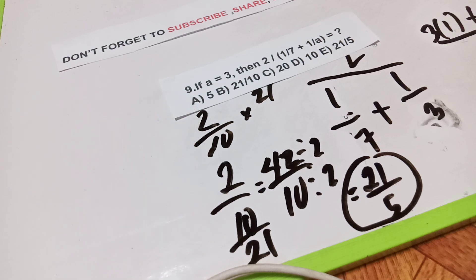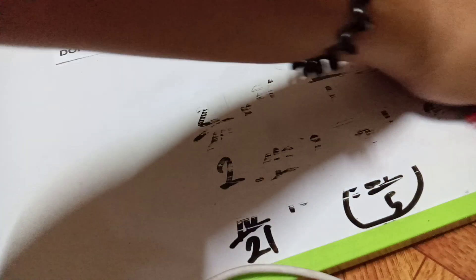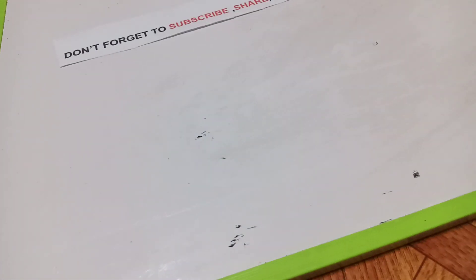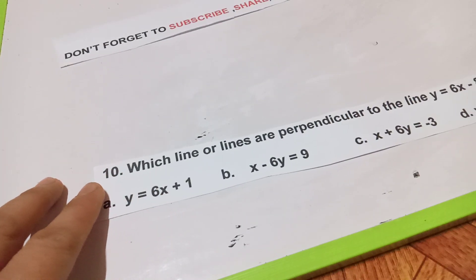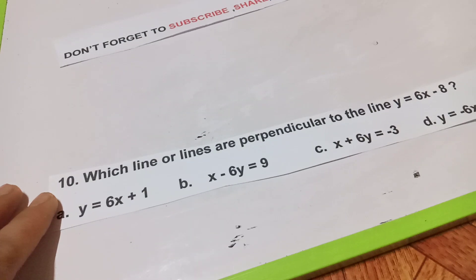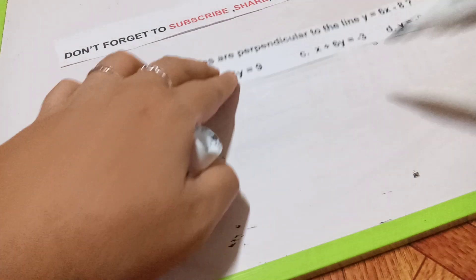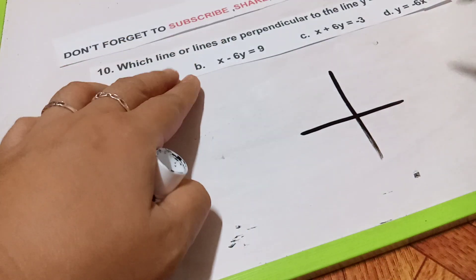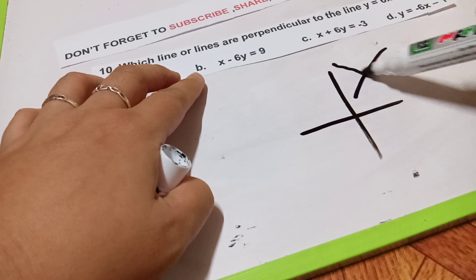Let's move to number 10. The question is: which line or lines are perpendicular to the line y = 6x minus 8? When we speak about perpendicular lines, suppose this is our x and y axis — when we speak perpendicular, the line crosses the original.